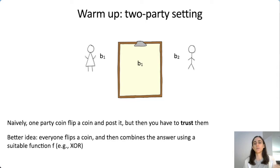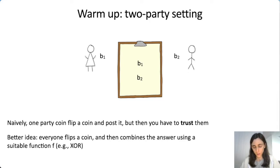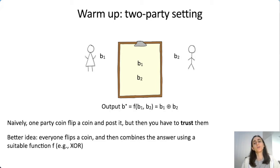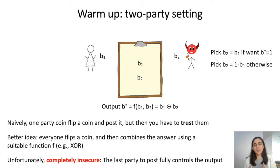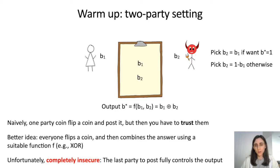A better idea is for both players to flip a coin and combine them: Bob flips a coin, Alice flips a coin, they post it on the bulletin board, and we combine them using a suitable function, for example by setting the output to the XOR of their input bits. Of course, this is completely insecure, because Bob is going second—he can pick his bit B2 based on B1, and in particular pick B2 to completely control the output whichever way he wants.